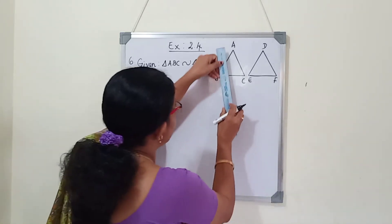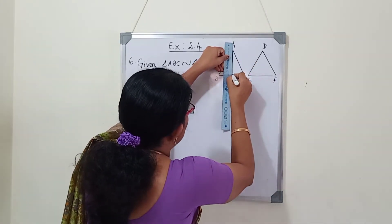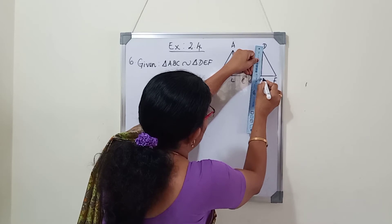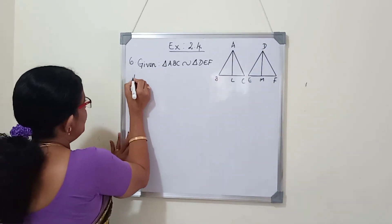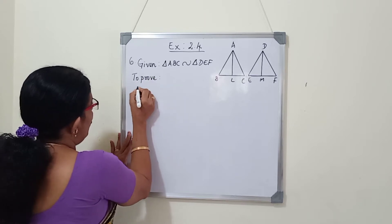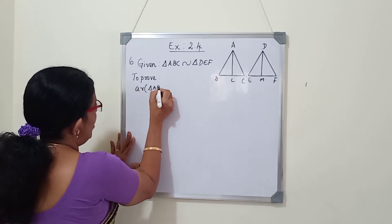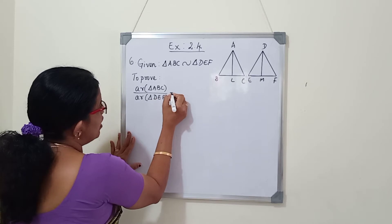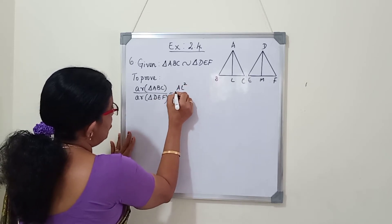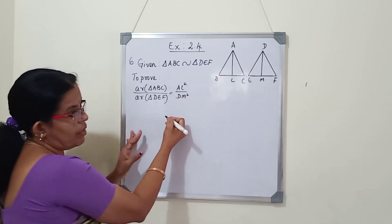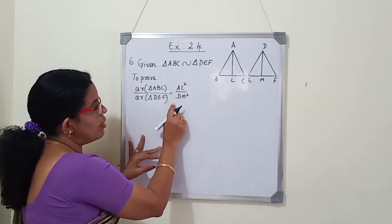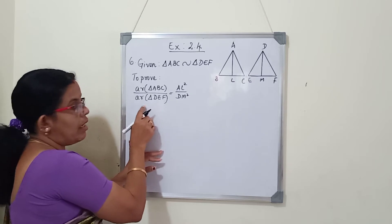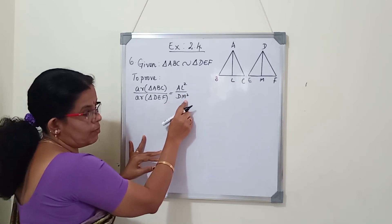We have to draw the medians. Let AL be the median of the first triangle and DM be the median of the second triangle. We have to prove that area of triangle ABC by area of triangle DEF is equal to AL square by DM square. We already know from a theorem that the ratio of areas of two similar triangles equals the square of their corresponding sides, but here we have to prove it for corresponding medians.